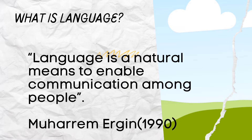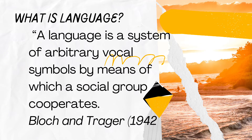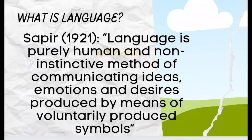According to Maharam Urgin in 1990, language is a natural means to enable communication among people. Bloch and Trager define language as a system of arbitrary vocal symbols by means of which a social group cooperates. Sapir defines language as a purely human and non-instinctive method of communicating ideas, emotions, and desires produced by means of voluntarily produced symbols.